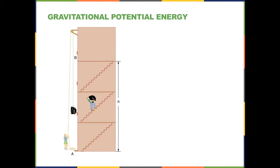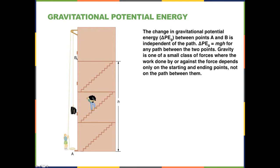Let's continue our discussion of gravitational potential energy by looking at this problem. We have two situations: first, a person carrying a television up a set of stairs to a point approximately H in height. A second person is doing the same job differently, using a pulley, moving the TV from the bottom in the same direction. This is meant to show that the path taken to get the television from the ground to point B doesn't really matter — it's path independent.